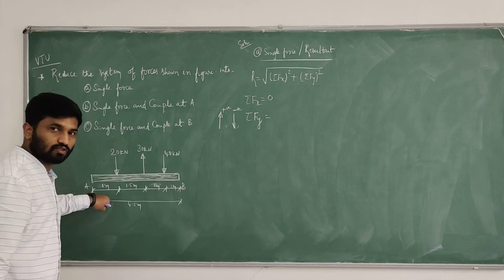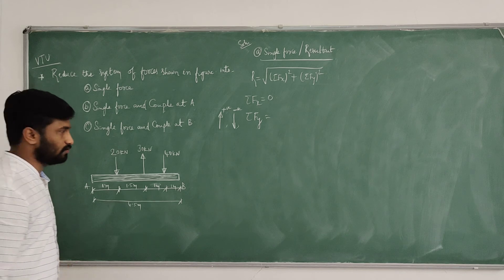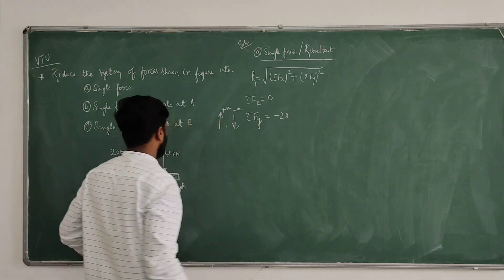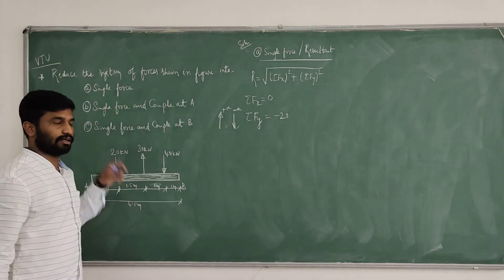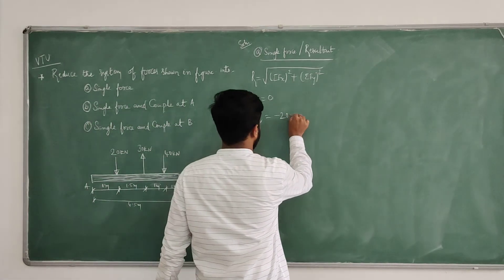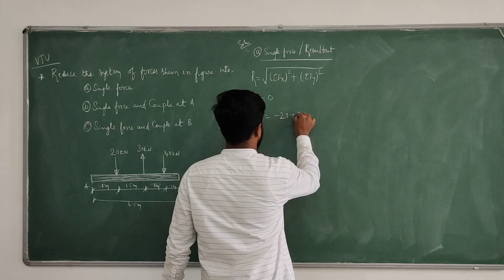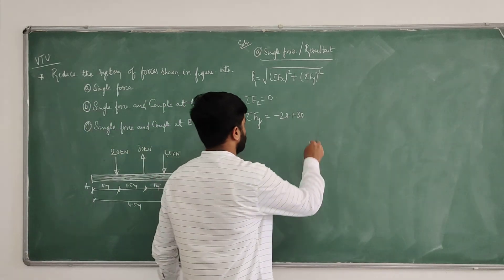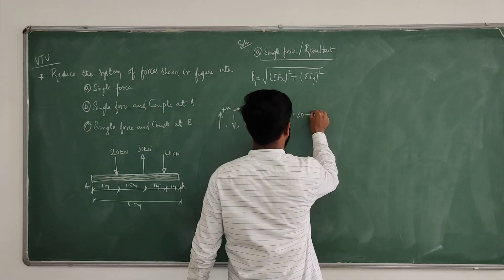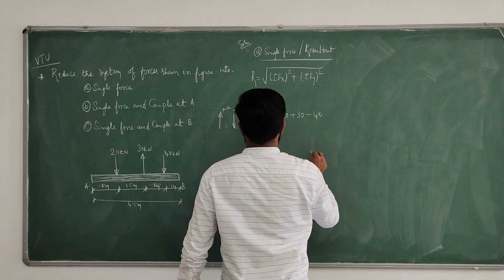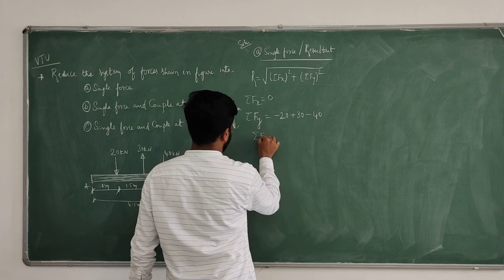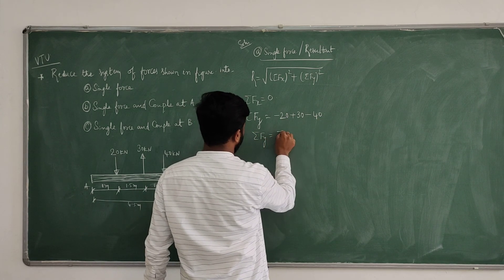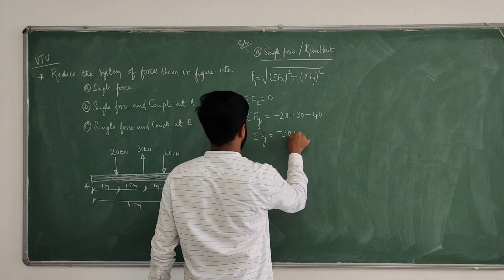So σFy equals: minus 20, because it is acting in the downward direction; plus 30, acting in the upward direction; minus 40, acting in the downward direction. Therefore, σFy equals minus 30 kilonewtons.